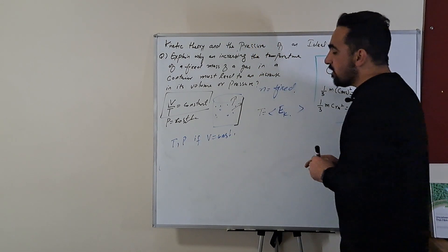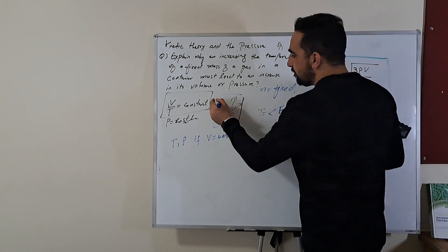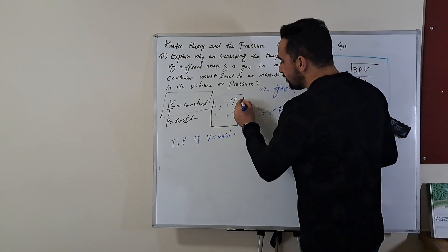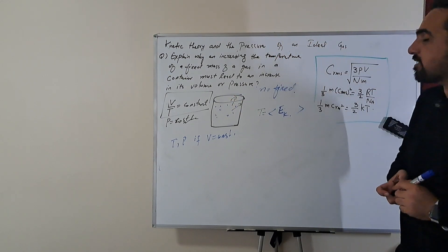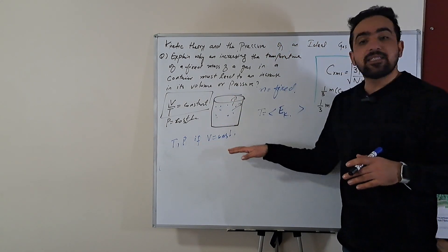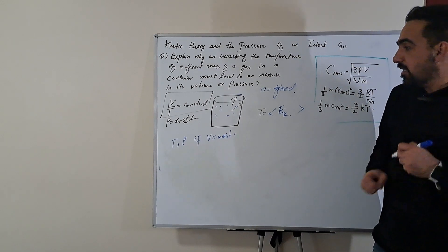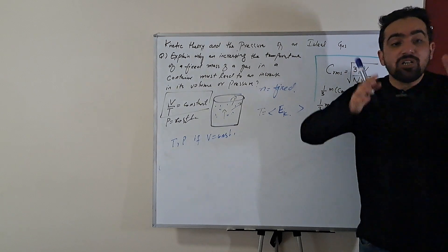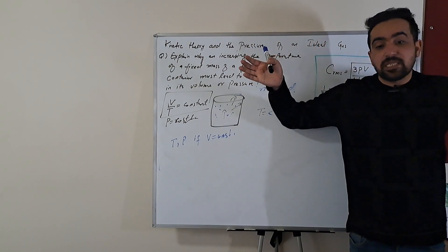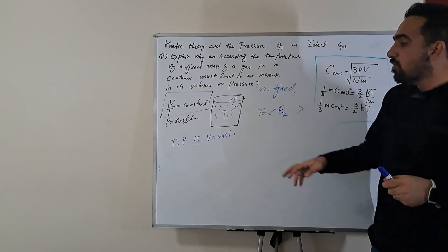Now your container has fixed walls, they can't be moved and the piston on the top is also fixed, it cannot move. When you increase the pressure, now the average kinetic energy of the molecules increases but they don't have enough space to expand out. What will they do?